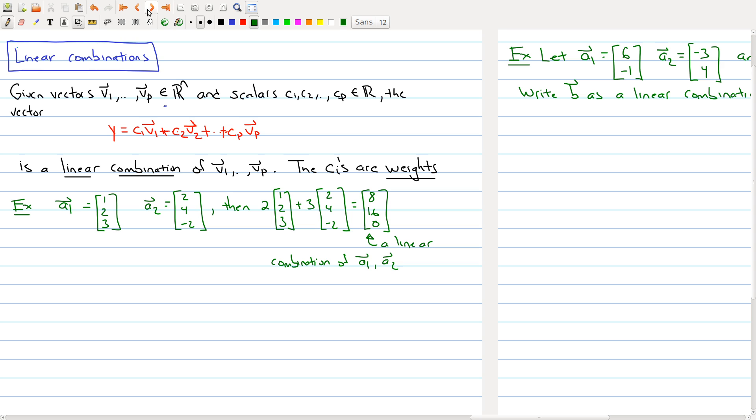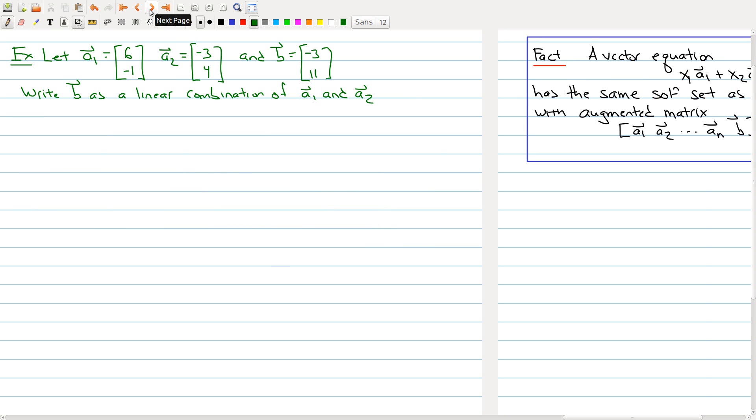So on the next page here, I have a slightly different question. In this question I'm kind of doing the reverse. I have two vectors a₁ is [6, -1] and the vector a₂ is [3, 4], and I have one other vector [-3, 11]. The question is I want to write b as a linear combination of a₁ and a₂.